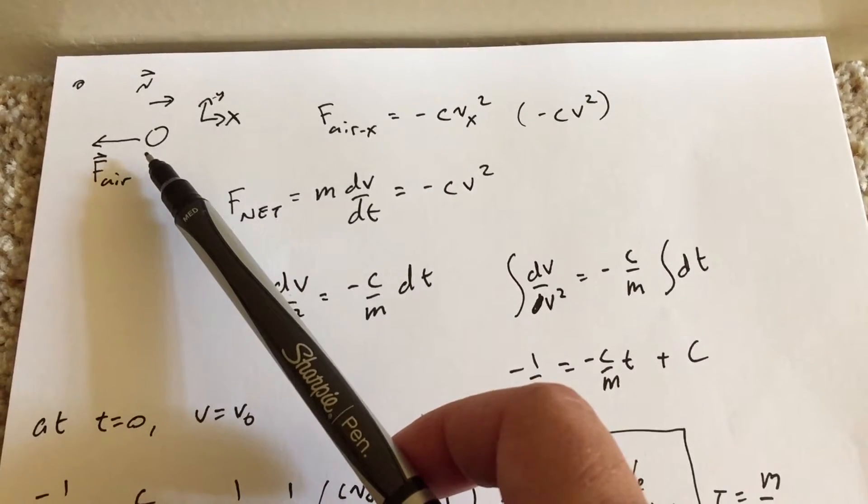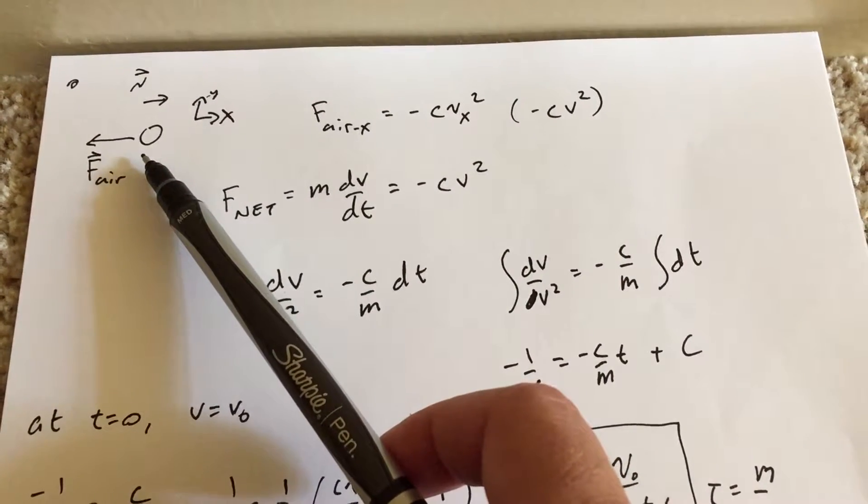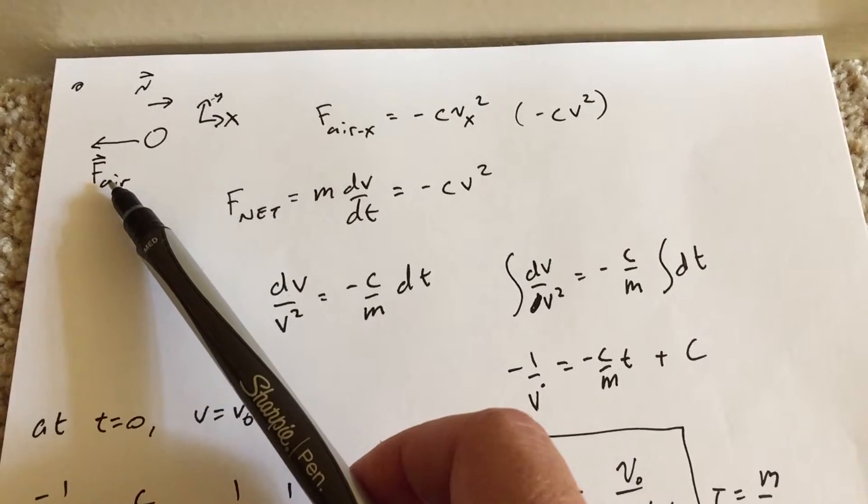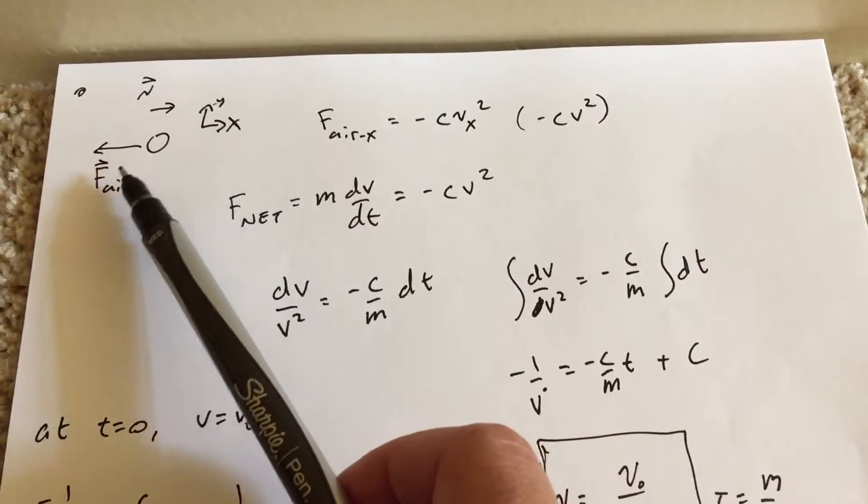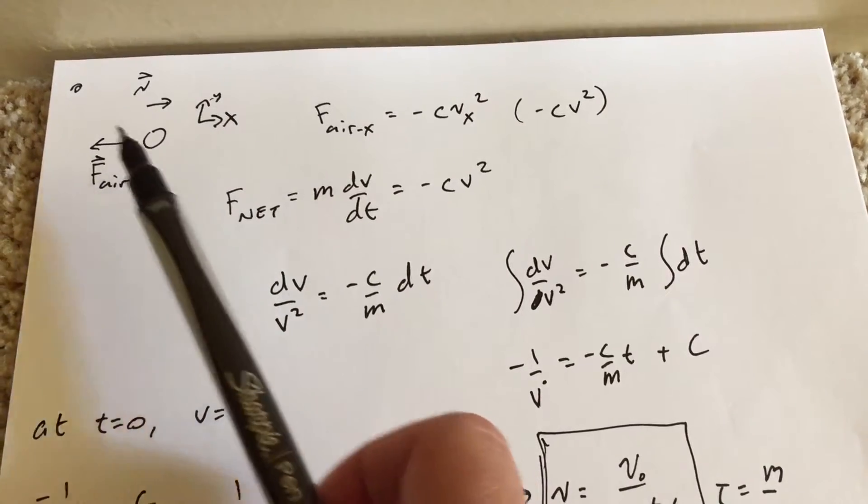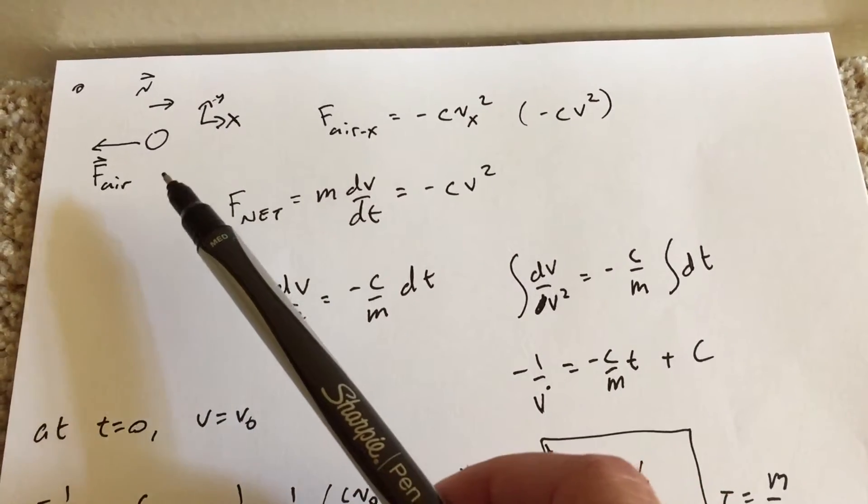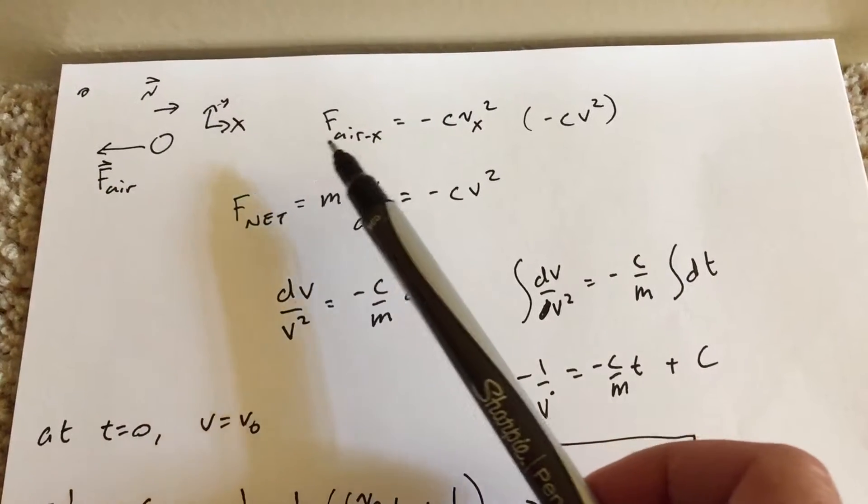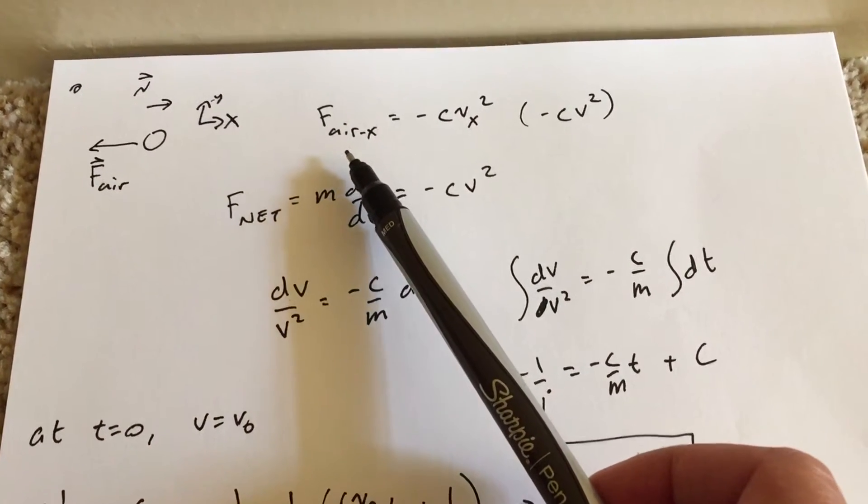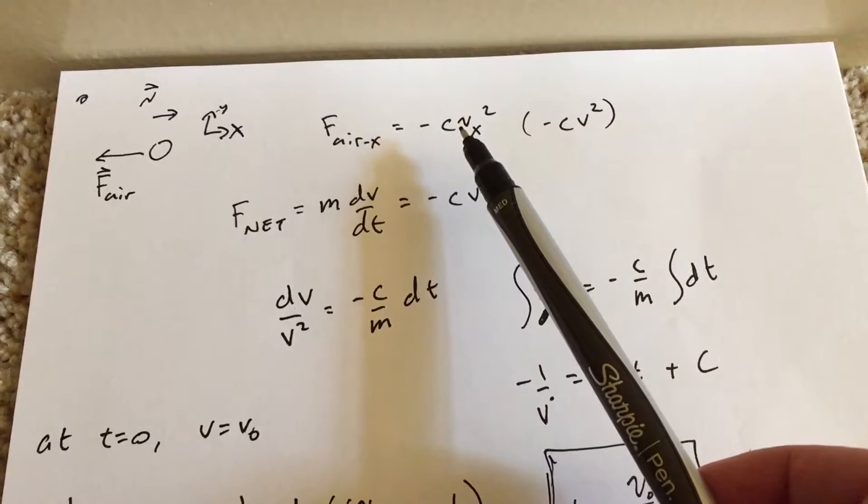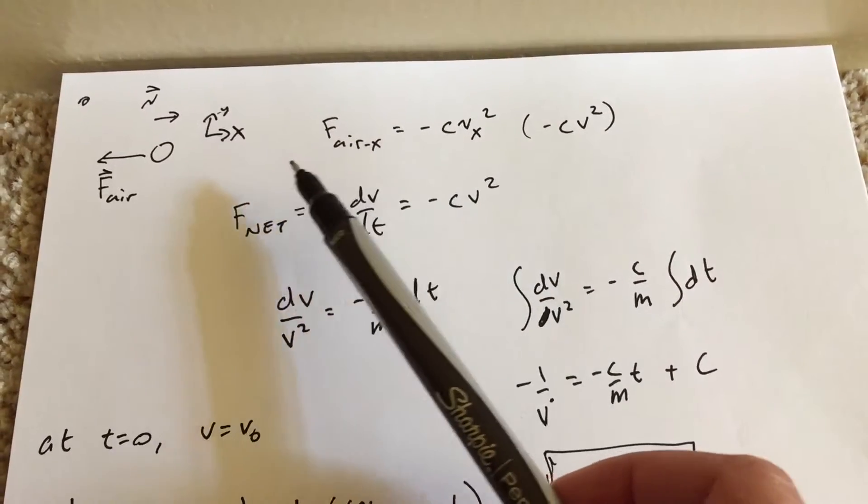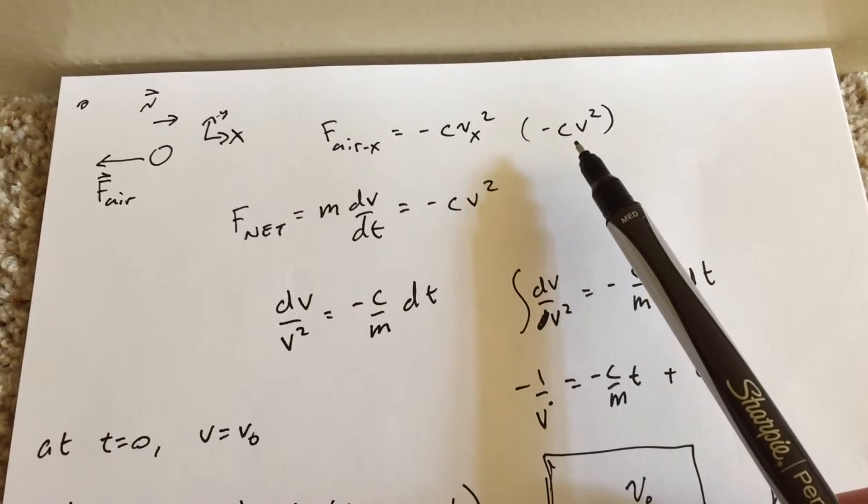Okay, so here we have an object, and it's moving with what we call quadratic air resistance. So that means that we have this air force pushing on it, and it's moving this way. And these are actually vectors, but everything's in one dimension, so we can just treat it in the x direction. I'm going to write the air resistance force as just some negative constant times the x velocity squared. But since we're only in one dimension, I'm just going to write that as v.